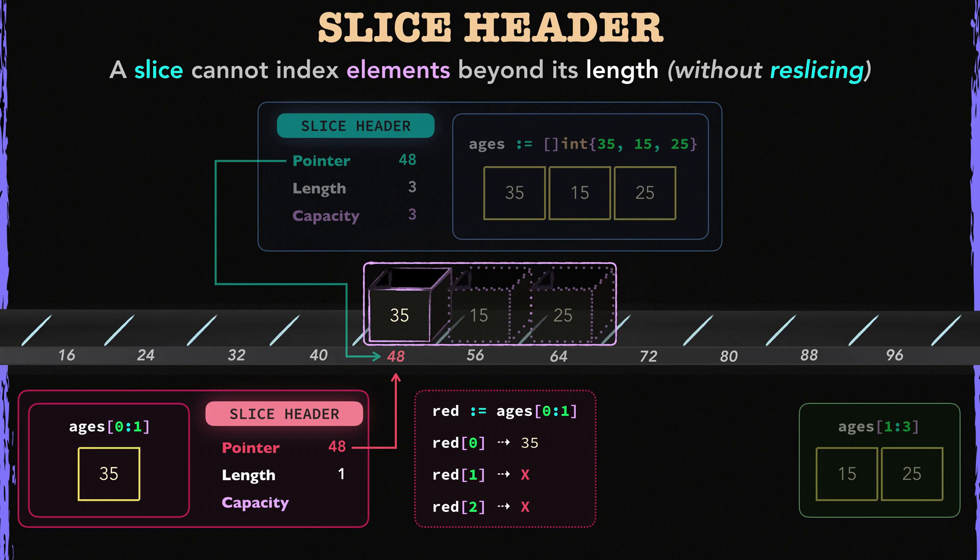Remember, the capacity field stores the length of the elements in the backing array starting from the slice's first element. Here, the red slice starts from the array's first element, so its capacity is 3, because there are 3 elements in its array.